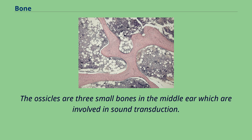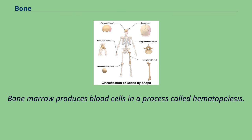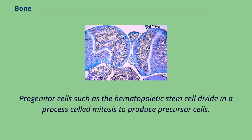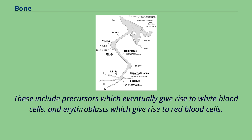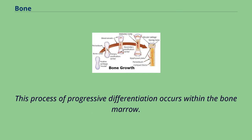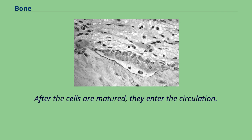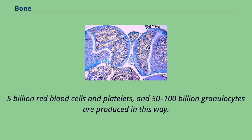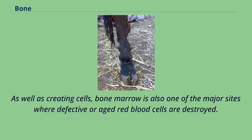The cancellous part of bones contains bone marrow. Bone marrow produces blood cells in a process called hematopoiesis. Blood cells created in bone marrow include red blood cells, platelets, and white blood cells. Progenitor cells such as the hematopoietic stem cell divide in a process called mitosis to produce precursor cells. These include precursors which eventually give rise to white blood cells, and erythroblasts which give rise to red blood cells. Unlike red and white blood cells created by mitosis, platelets are shed from very large cells called megakaryocytes. Every day, over 2.5 billion red blood cells and platelets, and 50–100 billion granulocytes are produced in this way. Bone marrow is also one of the major sites where defective or aged red blood cells are destroyed.